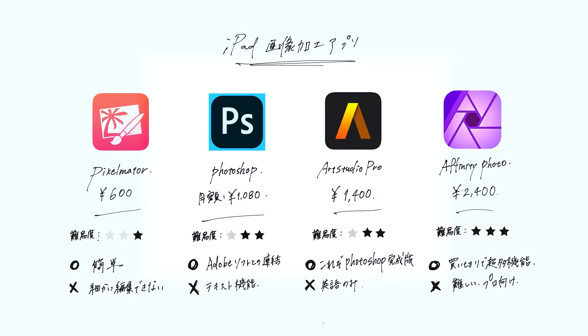Before I begin my Photoshop for iPad tutorial, I think it's important that you know of some alternatives to Photoshop. I recommend Pixelmator, RStudio Pro, and lastly Affinity Photo for advanced users. Along with Photoshop, they are some of the best apps for making composite images on your iPad. I suggest using Pixelmator for beginners and Photoshop for those who are Adobe users. RStudio Pro is a bit more complicated but still similar to Photoshop; however, it is only available in English. Affinity Photo is for advanced users, but you can do so much with it, so feel free to try it out.